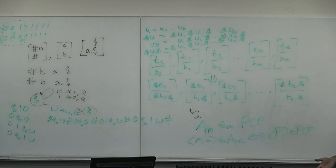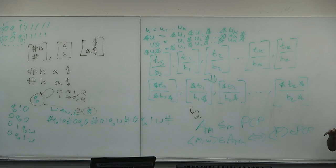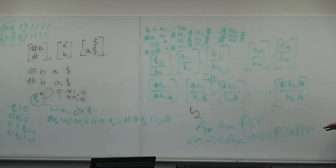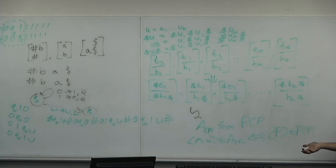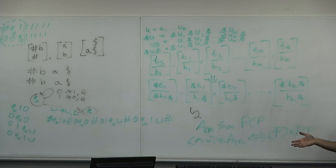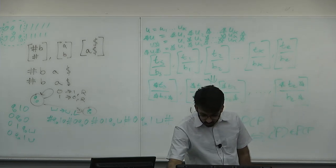Have you heard of the game Baba is You? There's a recent paper showing a Baba is You level where you're a little character walking around pushing blocks that change the rules of the game. The level has a solution only if a given PCP instance — a tile set — has a match. Similarly, I proved Super Mario is NP-complete by giving a level that has a solution only if a certain SAT instance has a solution. PCP is a simple problem like SAT that you can encode into other complicated structures and prove those things all have undecidable problems. All right, I'll see you on Thursday.